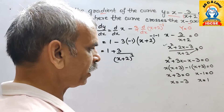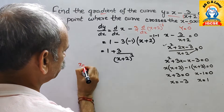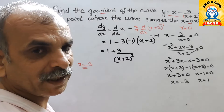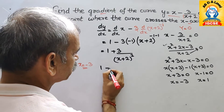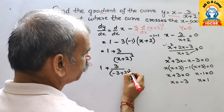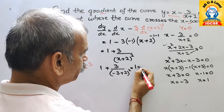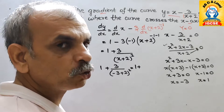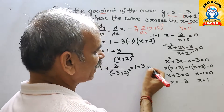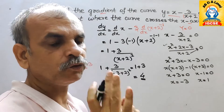Now substitute x = -3. We get 1 + 3/(-3+2)² = 1 + 3/(-1)² = 1 + 3/1 = 1 + 3 = 4. So the first gradient is 4.